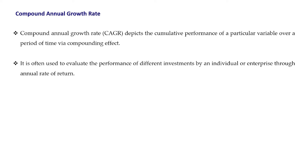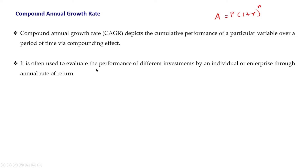First, we will see what is compound annual growth rate. This compound annual growth rate depicts the cumulative performance of a particular variable over a period of time via compounding effect. We are familiar with the compound interest formula: A = P(1 + r)^n, where r represents the compound annual growth rate. It is often used to evaluate the performance of different investments through annual rate of return.